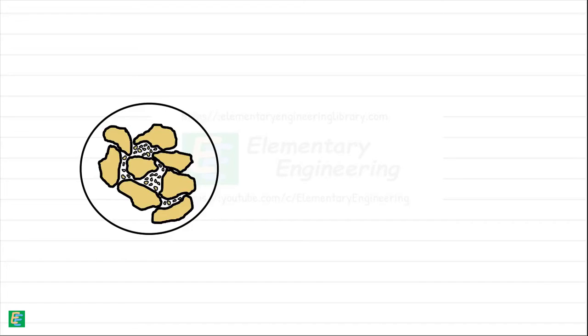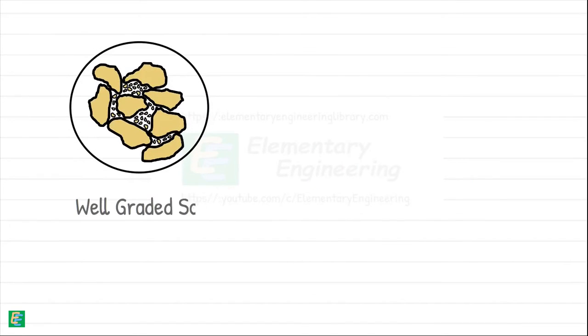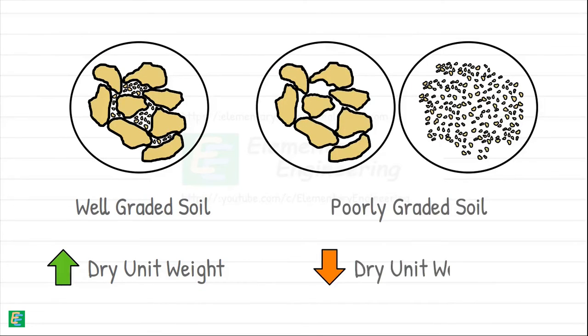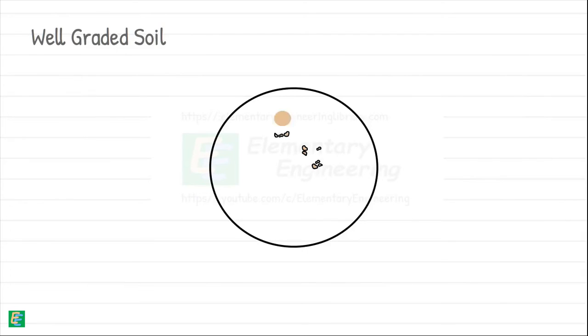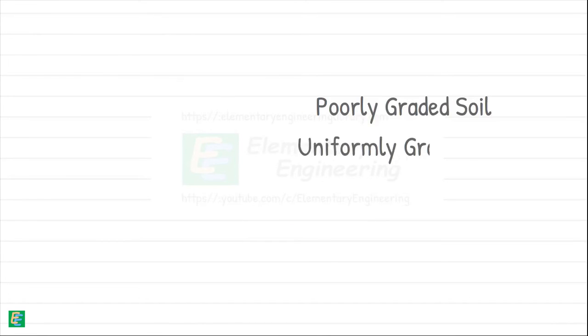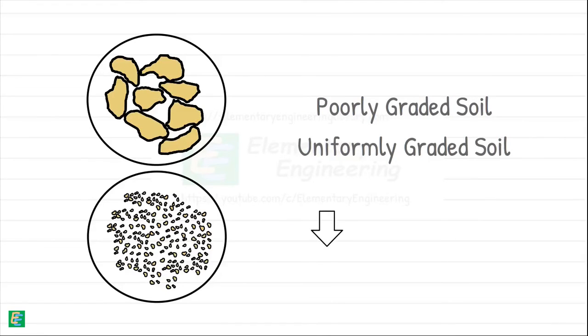Next factor is related to this one, and that is gradation of soil. We just discussed that adding some amount of fines to coarse soils improves its dry density as fines fill the voids of coarse-grained soils. By doing so, we improve the gradation of soil. And it is evident that a well-graded soil achieves a much higher dry unit weight than a poorly graded soil. A well-graded soil is a good mix of particles of different sizes. A poorly graded or uniform sand leads to the lowest dry unit weight.